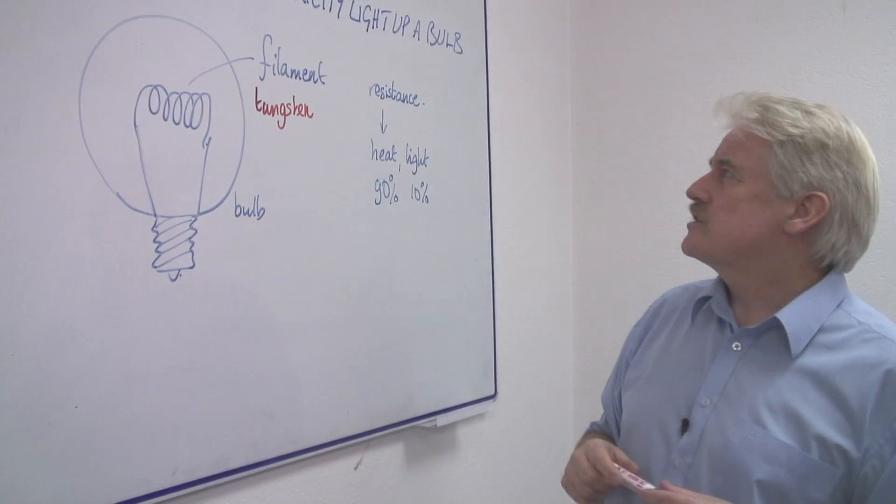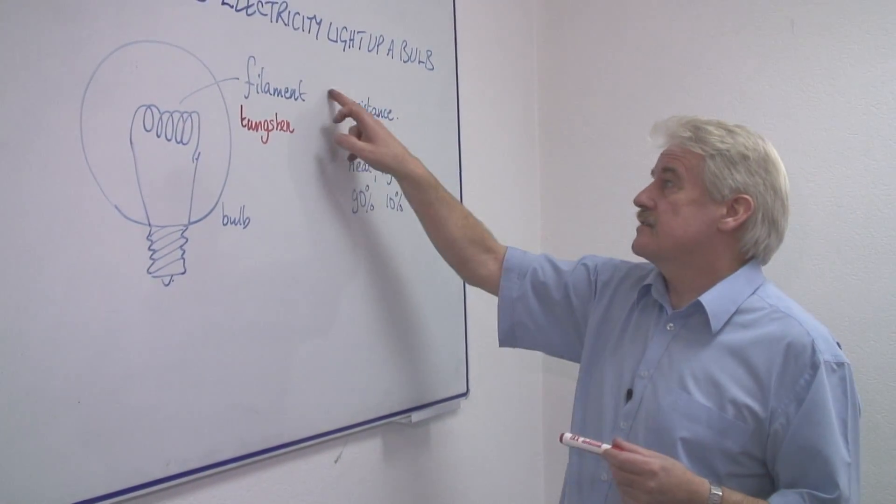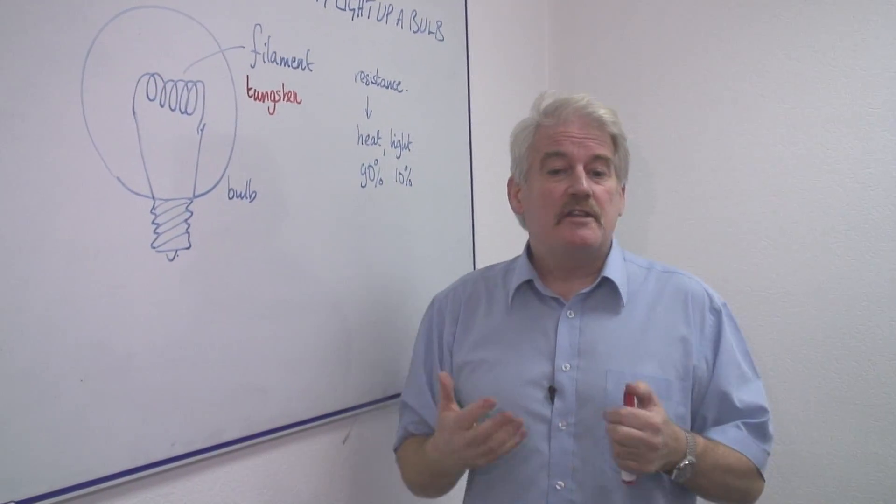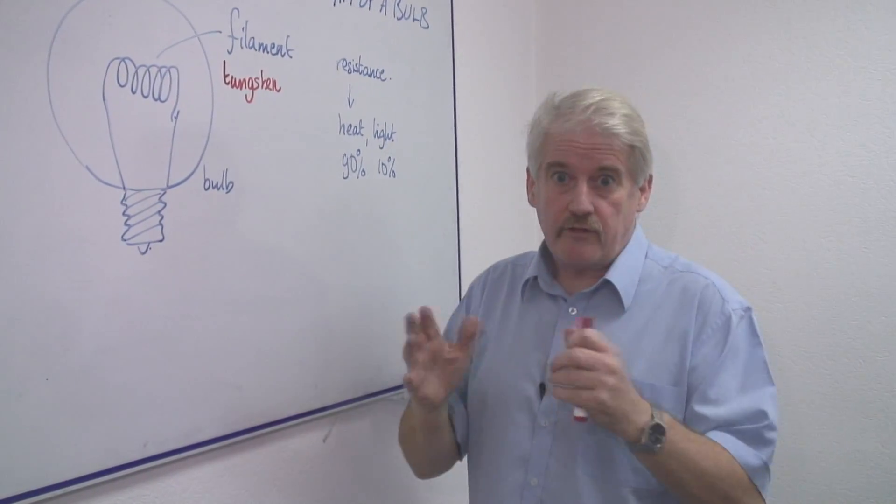But exactly how does this work? Well tungsten has resistance. Resistance is the ability of a material to allow or not allow electricity to run through it.